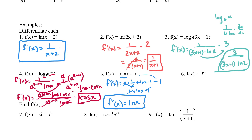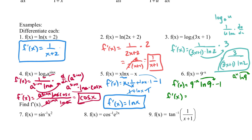For this next one, remember: the derivative of a^x is a^x times ln(a). So for 9^(−x), f′(x) is 9^(−x) times ln(9), but we also have to take the derivative of the exponent (−x) as part of the chain rule, which gives negative 1. So f′(x) equals negative 9^(−x) times ln(9).